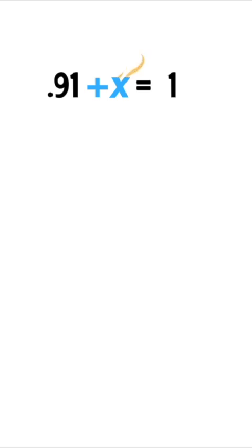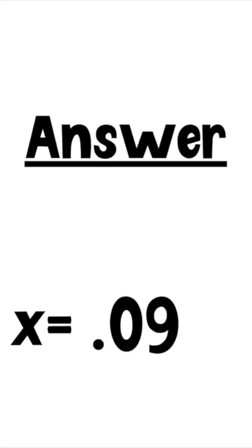We want that stinky X by itself. So we subtract 0.91 to get rid of the positive 0.91 on that side. So now the letter is by itself. But don't forget, Ziggy, what we do to one side, we do to the other. So we subtract 0.91 from the other side too. Now we get our answer, which is X equals 0.09.